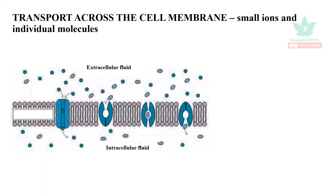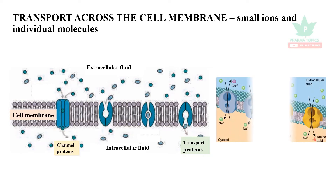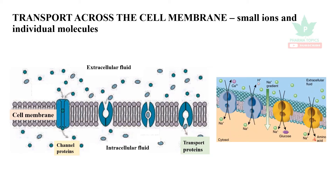Let us see about the transport of molecules across the cell membrane. For small ions and individual molecules, the cell membrane is permeable to solutes through channel proteins and transport proteins. There are separate channels for sodium, potassium, or chloride, and there are sodium-potassium ATPase pumps which cause influx or efflux of ions.